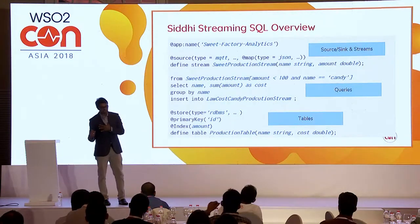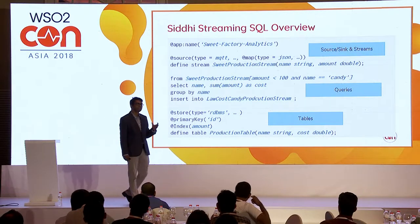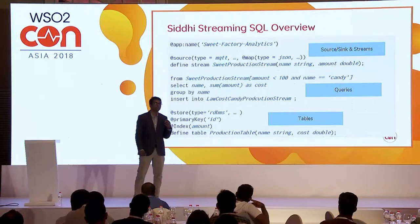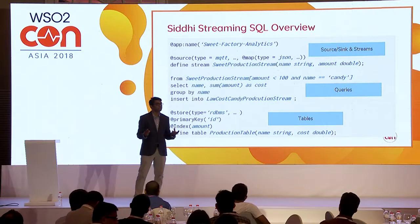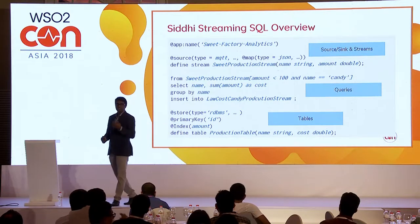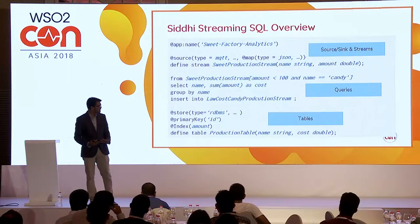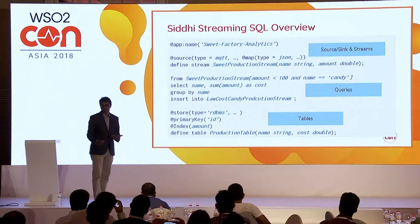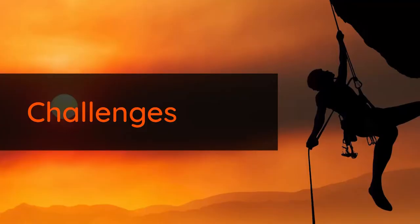As and when there is an event into the sweet production stream, that data goes through the query, gets processed, and the output comes to the low-cost candy production stream. You can then consume that and do further processing. Stream processing cannot live on its own — sometimes we need to correlate with databases or other systems. In those cases, we can define a table within the same SQL and join with it to do various other operations.